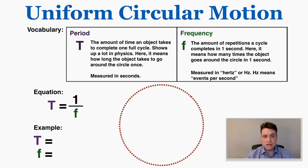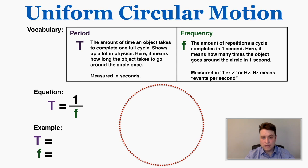There's an interesting relationship where the period is always equal to one over the frequency — this is always true. For example, if you're going around a circular path and it takes four seconds to go around the path altogether, that's your period — four seconds — because that's the time it takes to repeat once.